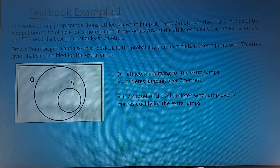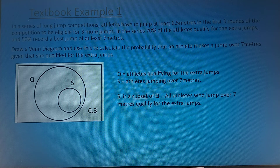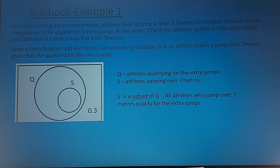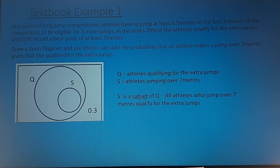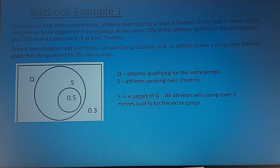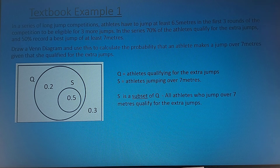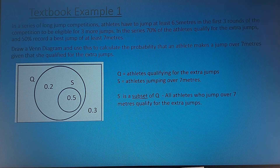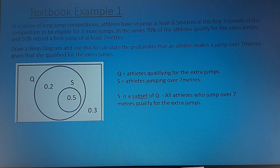70% of athletes qualify for the extra jumps, which means 30% don't. 50% of all athletes jump 7 meters, so they belong to set S. The remaining 20% must have come from set Q but outside of S — those athletes jumped at least 6.5 meters and qualified, but less than 7 meters.